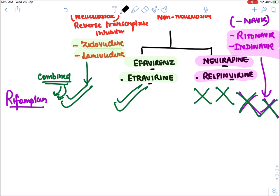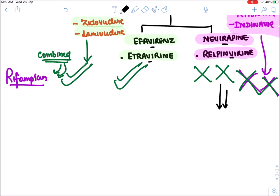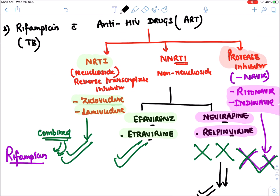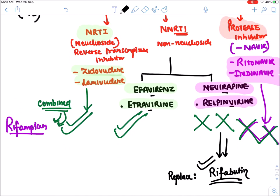If there is a compelling indication to use protease inhibitors or nevirapine, you replace rifampicin with rifabutin — a congener of rifampicin — which can be safely combined with those drugs.